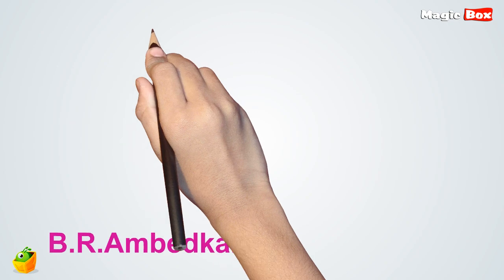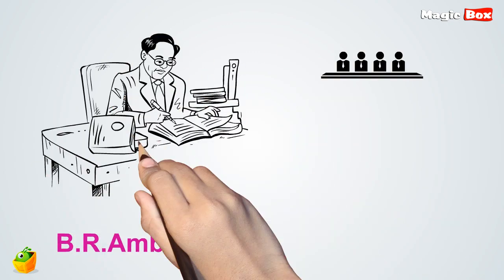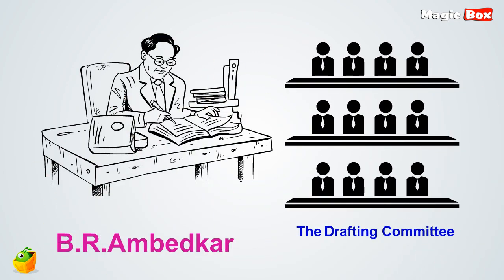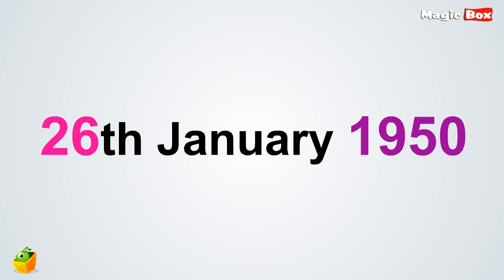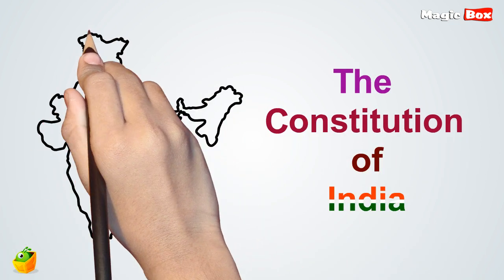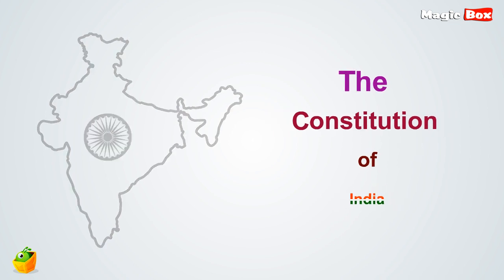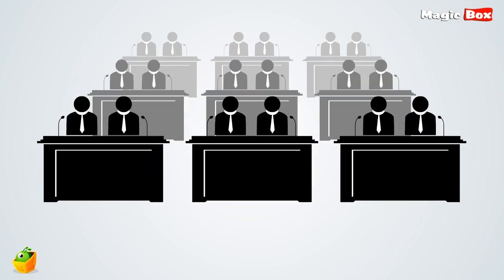The drafting committee under B.R. Ambedkar recommended the parliamentary type of government. On 26 January 1950, the Constitution of India came into force and this constituent assembly became the Provincial Parliament of India.